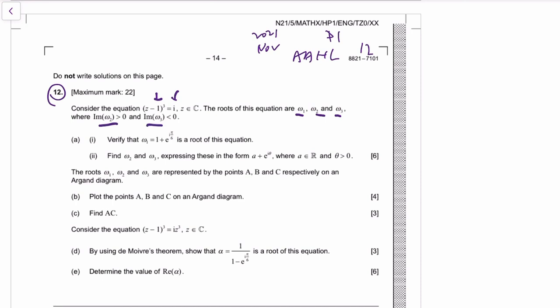The imaginary part of omega 2 is bigger than zero while omega 2 is less than zero. Okay, verify that this is a root. When they say verify, it means you can simply substitute this into the equation to show it would work. On the other hand, if they say show, then you better actually solve the equation yourself.